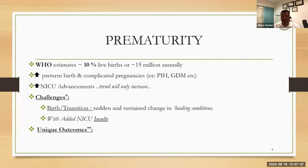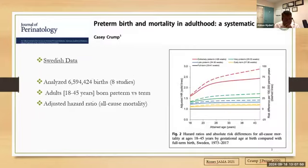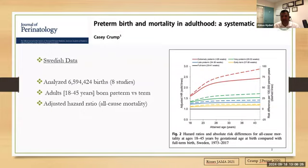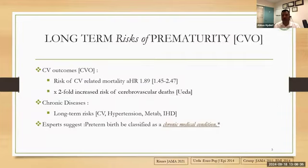These preterm infants have unique challenges at birth with sudden and sustained changes in loading conditions and NICU insults. They have unique outcomes. Let's talk about outcomes related to mortality. This elegant work by Casey Crump analyzed 6 million births. The x-axis is age, and the y-axis is adjusted hazard ratio for death. Yellow is term and red is extreme preterm. The younger you are born, the higher the risk of all-cause mortality. But it's not only mortality that's important — it's also long-term outcomes.